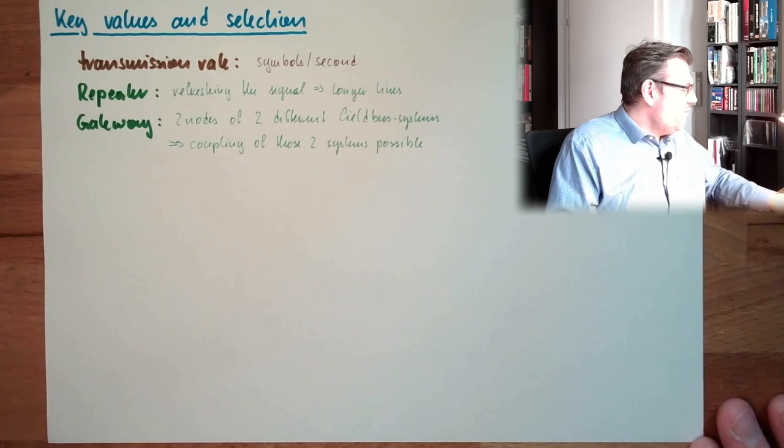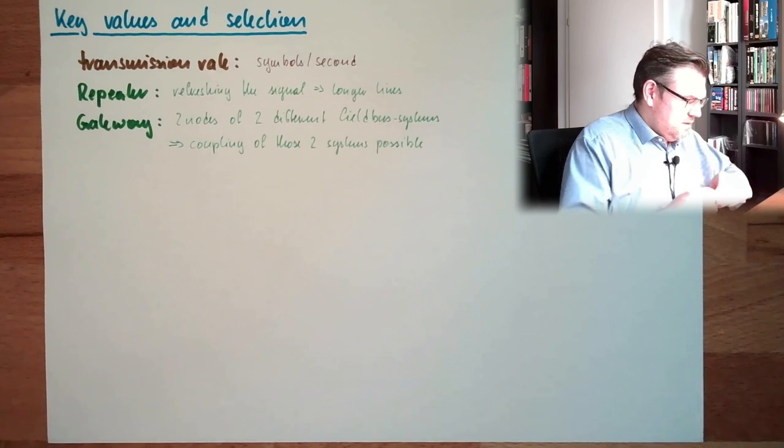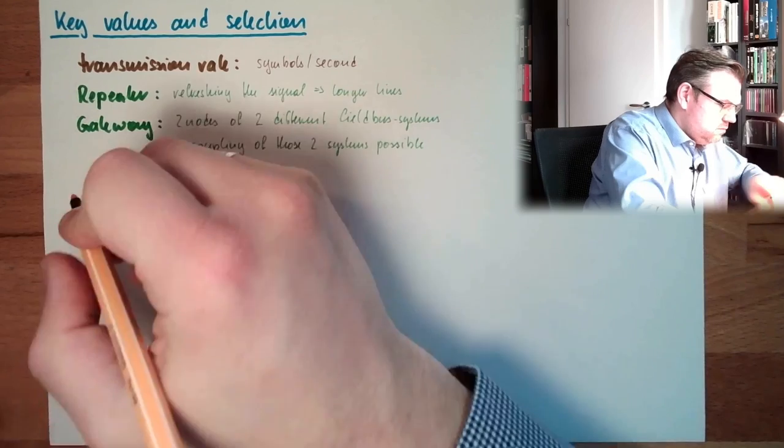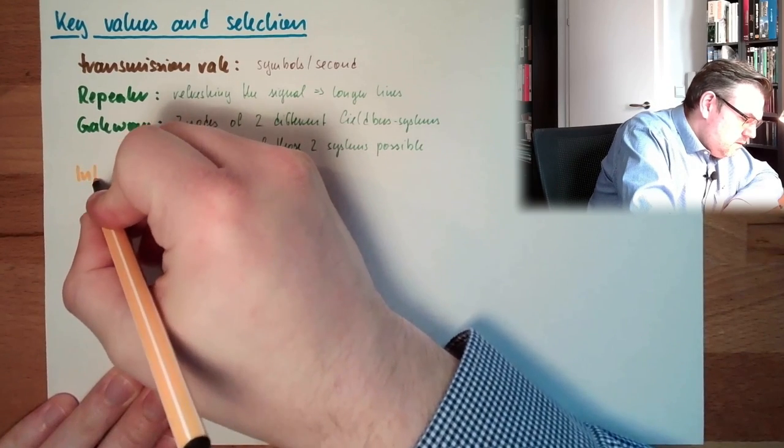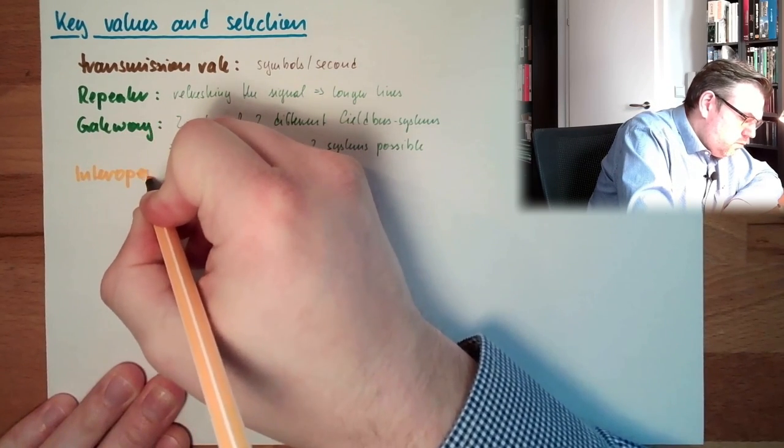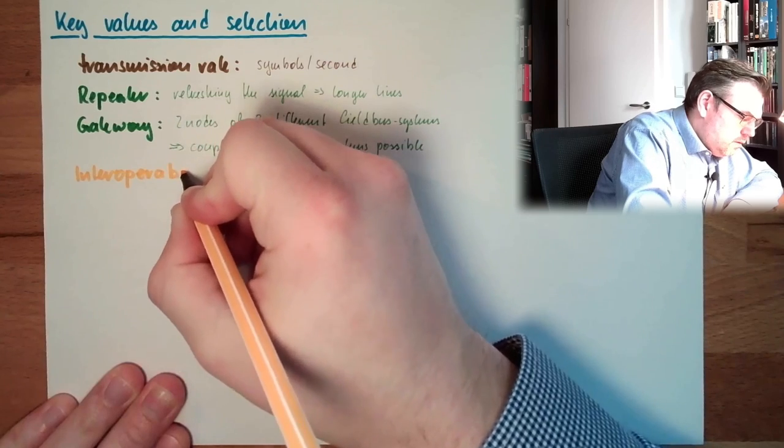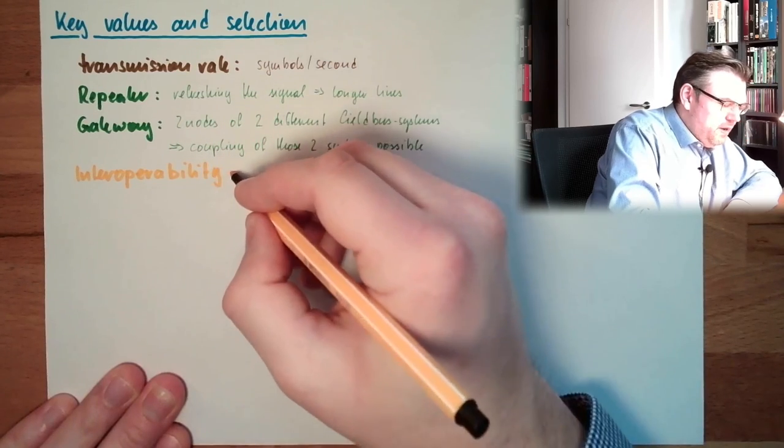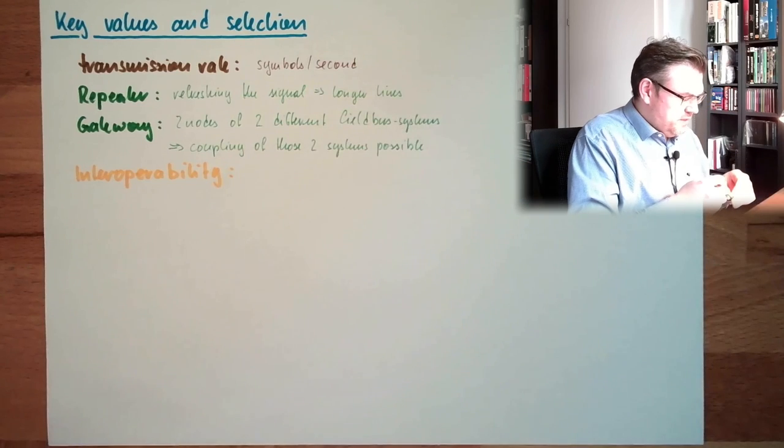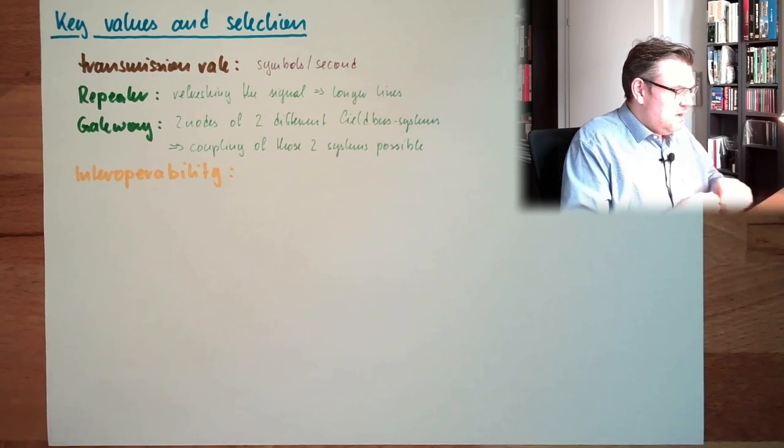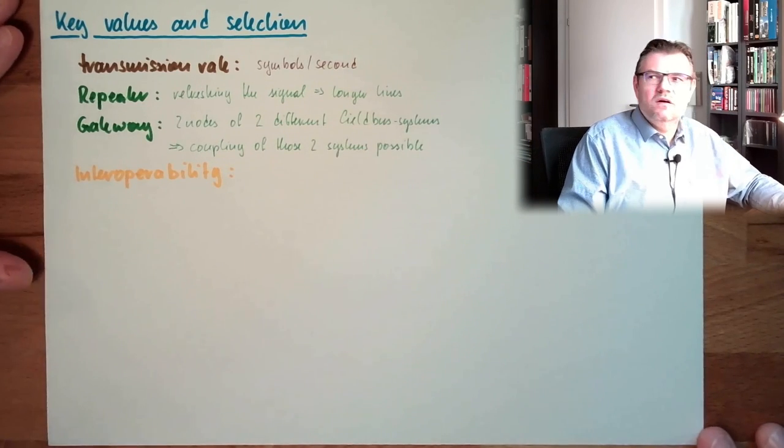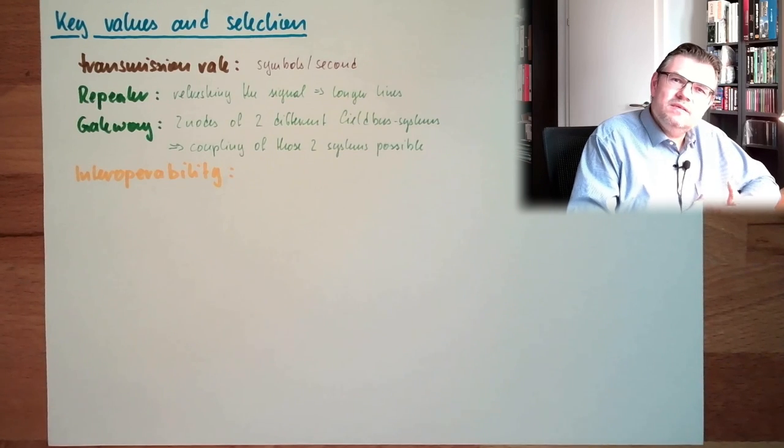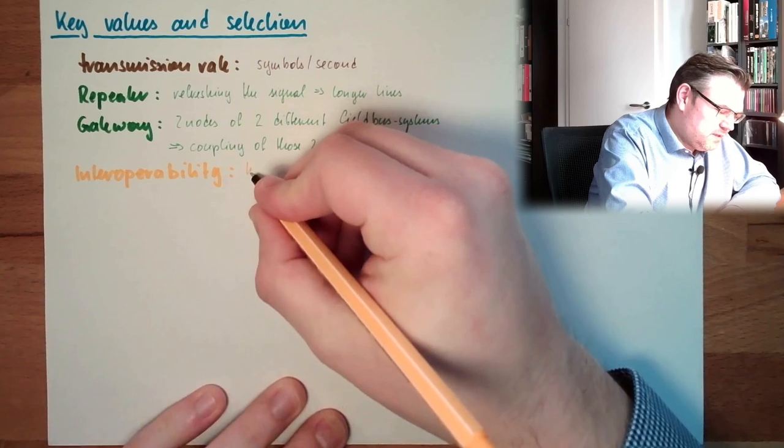Then we have the term of Interoperability. Interoperability, this means how many vendors, how many different, how many things I can connect. How many things I can connect.